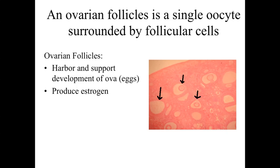The structures we're going to focus in on first are going to be the ovarian follicles. The ovarian follicles are going to be, in essence, a single oocyte — essentially an egg cell which is going to be developing. Surrounding that are going to be follicular cells, which are going to be important because they're going to be helping to support the development of the ovum, as well as producing hormones such as estrogen.